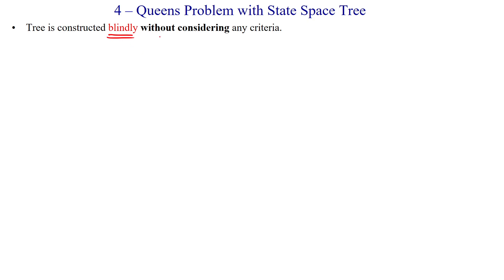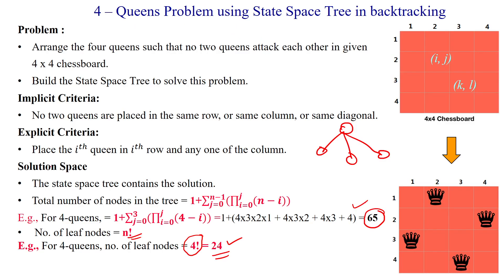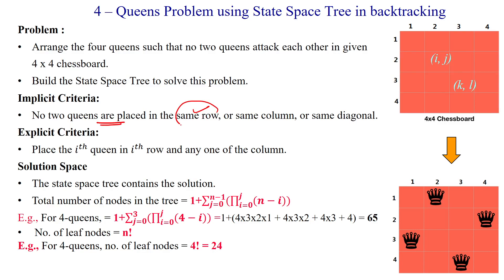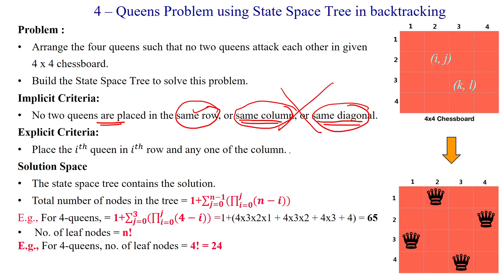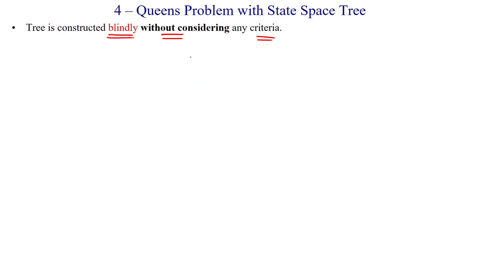Now we will see how to construct this state space tree. Here, I am not going to use any implicit criteria — no same row, no same column, no same diagonal. I will only consider the explicit criteria. Without considering the implicit criteria, I am going to construct the state space tree blindly. That is called blind construction — blindly constructing the state space tree for the four queens problem.